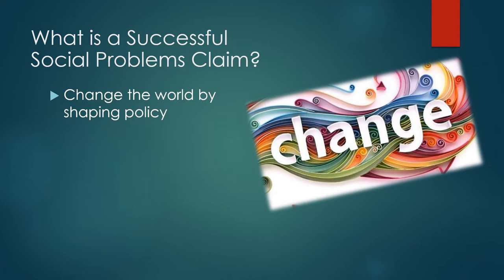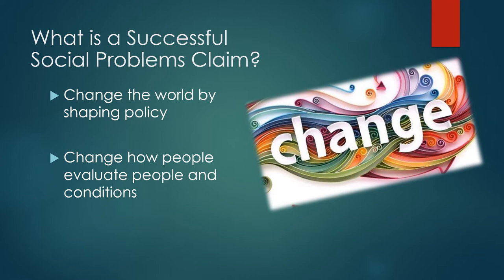We change the world by shaping policy, and what she means by this is the objective world. If a social problems claim gets to the point where it actually makes changes in policy, those changes in policy change the conditions in the world that we observe. These are objective changes — it changes the facts about our social world. But it also changes how we think about other people, how we evaluate people, how we evaluate those conditions. There is this objective change, meaning something is now different in our world, and there is the subjective change, meaning people have changed their minds and their hearts and their values around evaluating people and conditions.